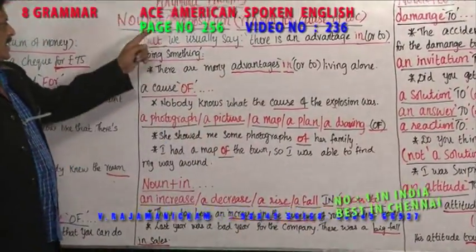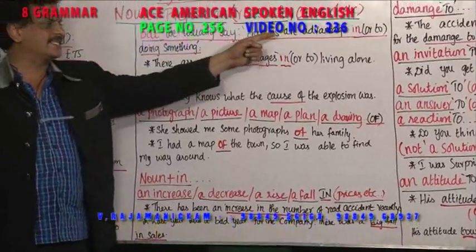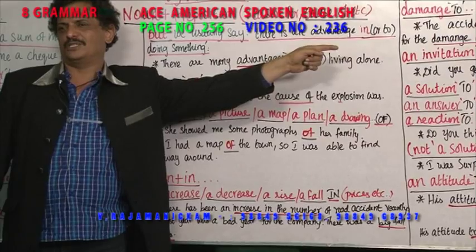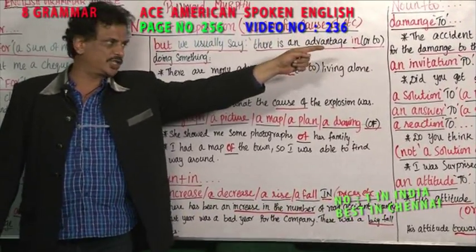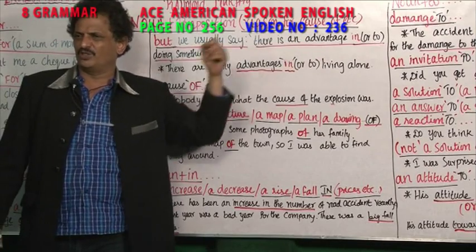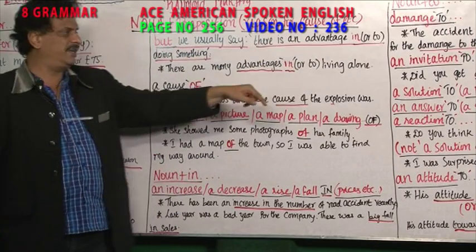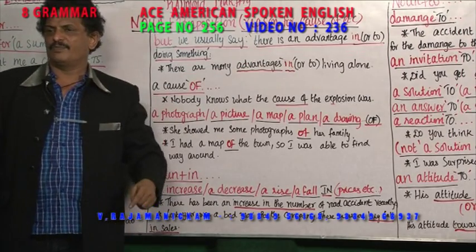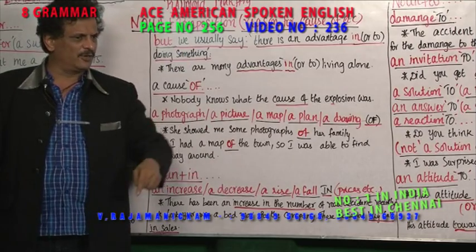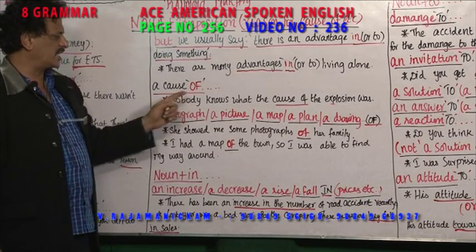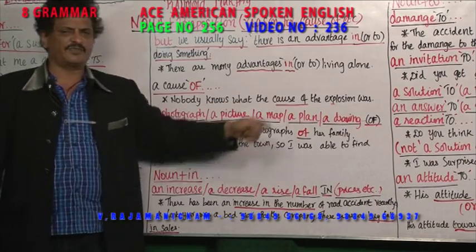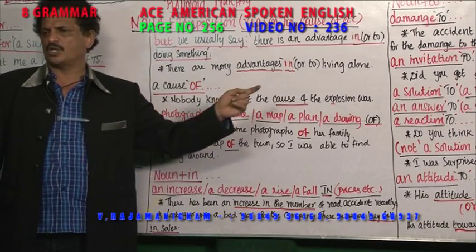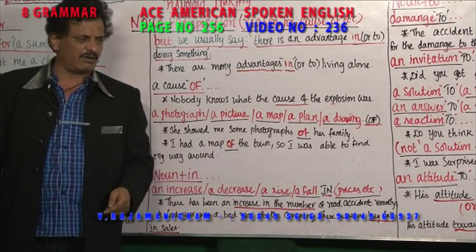But we usually say there is an advantage in — after 'advantage', using the preposition 'in'. Advantage of means something useful you are getting. Advantage in means doing something — there are many advantages in living alone. A cause of — cause is a noun, of. Nobody knows what is the cause of the explosion. Cause of, reason for, cause of — after 'cause', 'of' is used as the preposition.